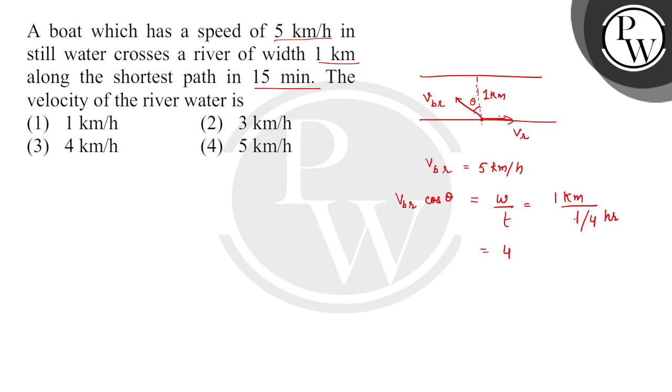v_b,r value given is 5 km per hour. cos theta will be 4 by 5. So sin theta will be 3 by 5. Correct.